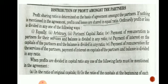Profit and losses are distributed to partners on the basis of the following ways: equally, arbitrarily, partners' capital ratio, payment of remuneration to partners for their services with balance divided in any ratio, payment of interest on the capital of the partner with balance divided in any ratio, and payment of remuneration for services of the partner combined with payment of interest on capital with balance divided in any ratio.